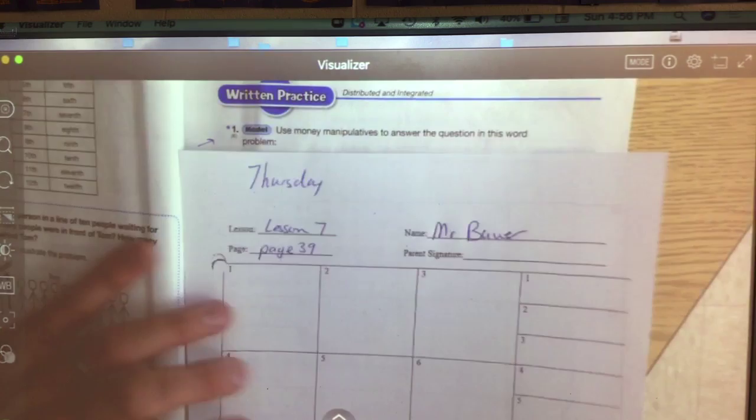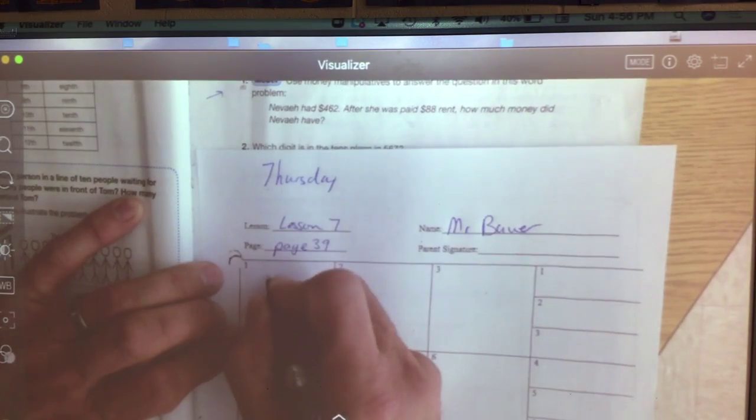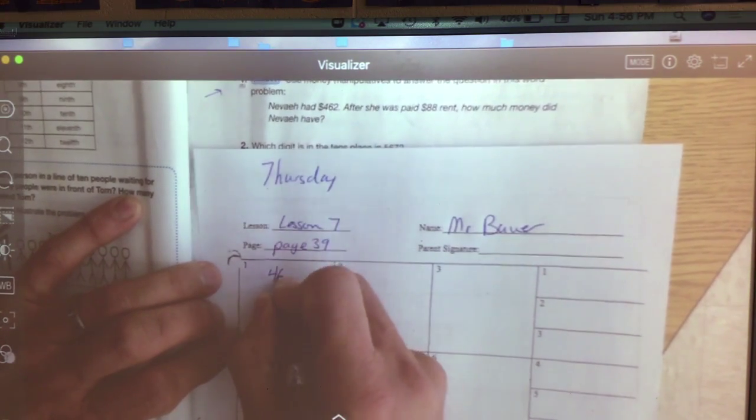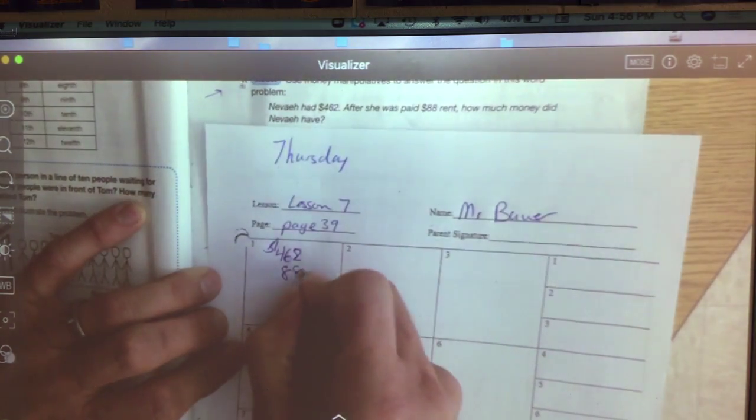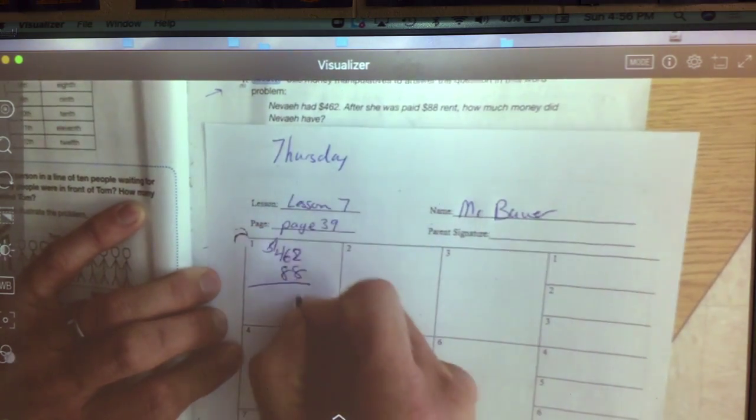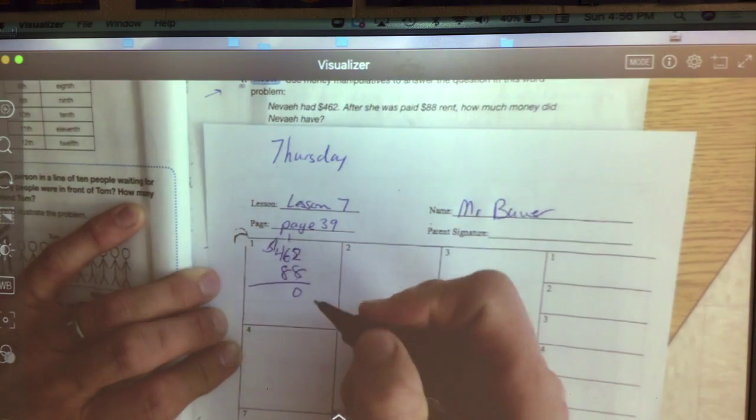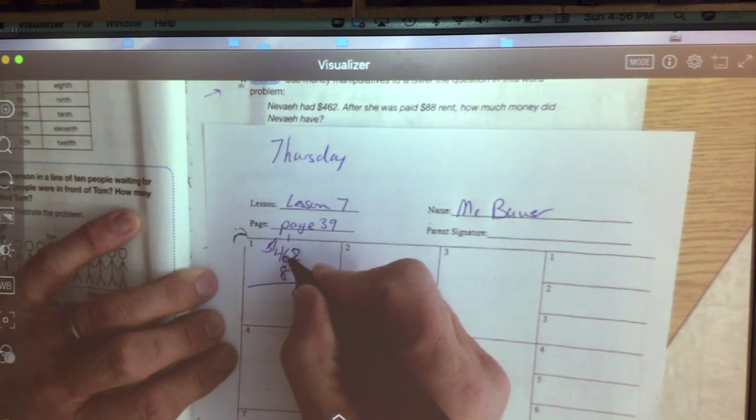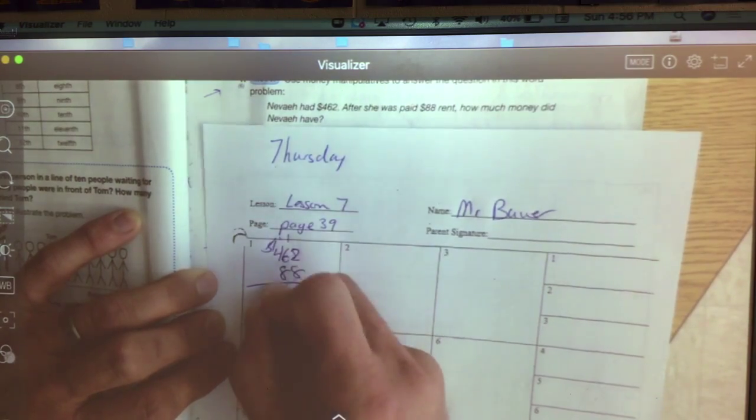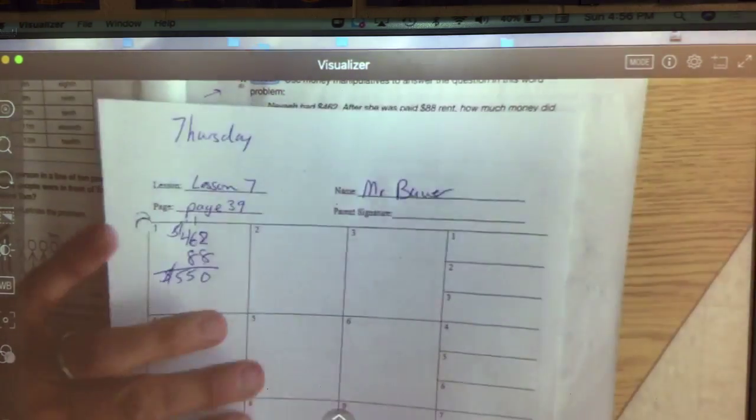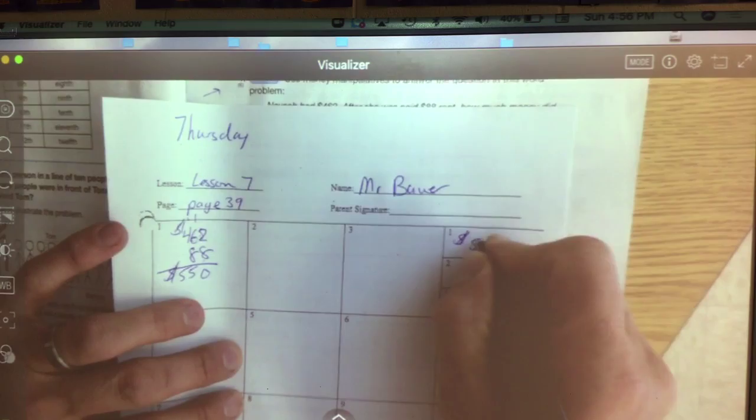Okay, so we got our addition algorithm here. Let's get it stacked up. $462 plus $88. 2 plus 8 is 10, zero down, 1 up. 8 plus 6 is 14, plus 1 more is 15. Carry the 1. 4 plus 1 is 5. Don't forget your dollar sign. $550.